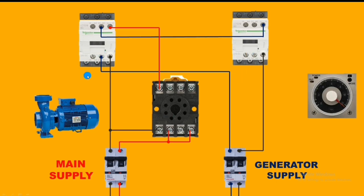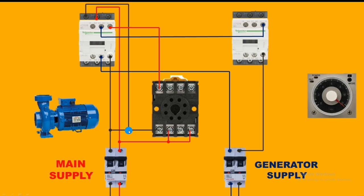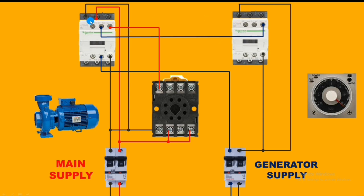Now for the power wiring connection: in the main contactor, connect the line from the main power supply to the L2 terminal — you can use any terminal. The neutral wire from the main power supply connects to the L1 terminal. For the generator power supply, same wiring: neutral connects first to the L1 terminal — the terminal should be the same as in the main contactor. Then the line from the generator or inverter power supply connects to the L2 terminal.